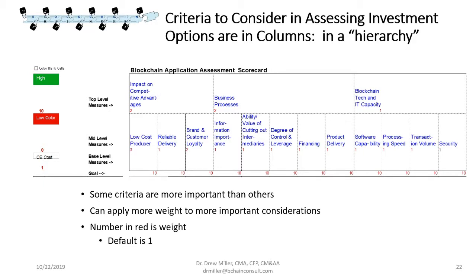The second-level mid-level measures break down the top-level areas. For example, impact on competitive advantages is broken into three areas: impact on being a low-cost producer, having reliable delivery, and having brand and customer loyalty. In this example the firm decided to put most weight on being a low-cost producer as more important. Your CEO may have a different view than the team, and you can adjust the weights however you want.